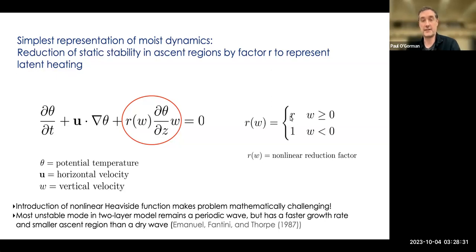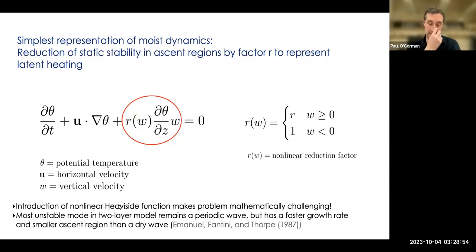This was introduced in Emanuel, Fantini, and Thorpe, which is a classic paper on moist baroclinic instability. The parameter omega can be derived as a function of temperature and pressure. What makes this mathematically challenging is that we now effectively have a nonlinear Heaviside function — it's nonlinear because omega evolves with the flow; you have to know where you have ascent and descent. Emanuel, Fantini, and Thorpe showed that in this kind of two-layer model — they actually did a semi-geostrophic model — you get a periodic wave that is unstable, with a faster growth rate than the dry model and a smaller ascent region.